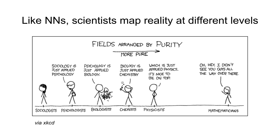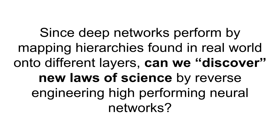Scientists map different levels of reality by different fields — physicists feed on mathematicians, chemists on physicists, and then there are biologists, psychologists, and sociologists. You can imagine these scientists as really different layers of a neural network which is trying to approximate and model the world we see out there. Now here's an idea I find very very interesting and intriguing: supposedly whatever hints we have so far are true, and deep neural networks are performing by mapping and modeling hierarchies found in the real world onto different layers.